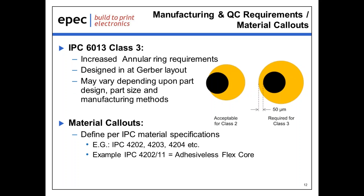Regarding material call-outs, we recommend to all of our customers that both the rigid and flex materials utilized in the design be defined by IPC specifications rather than using specific material manufacturer part numbers. The reason being: not all suppliers utilize all available materials, not all materials are readily available geographically throughout the world, and each construction with a given set of materials requires a specific UL certification which a supplier may or may not have in place. Utilizing IPC call-outs allows for multiple equivalent material options without any compromising of the design, and could potentially avoid requalification should a future change be required.